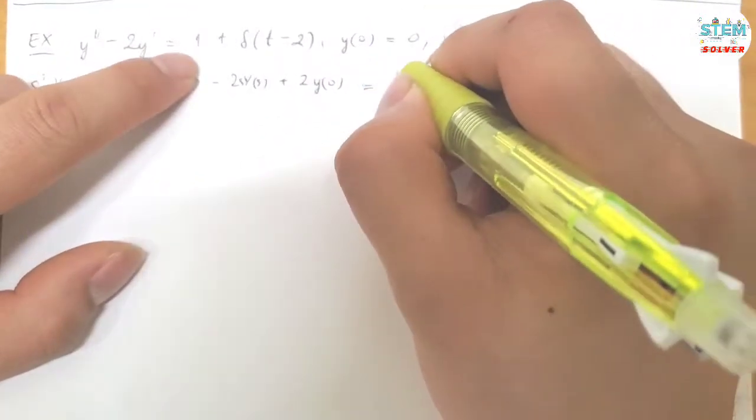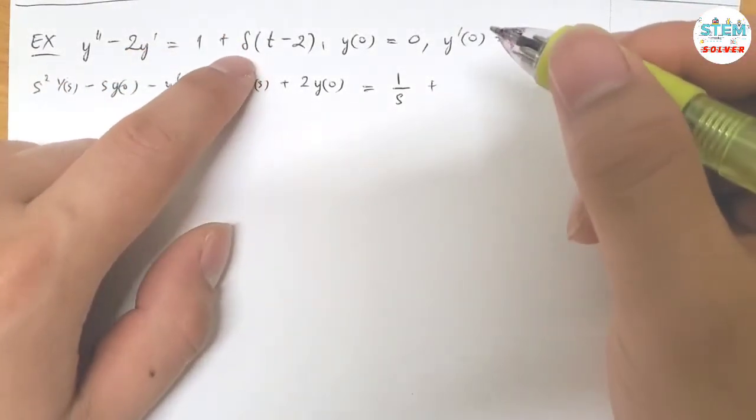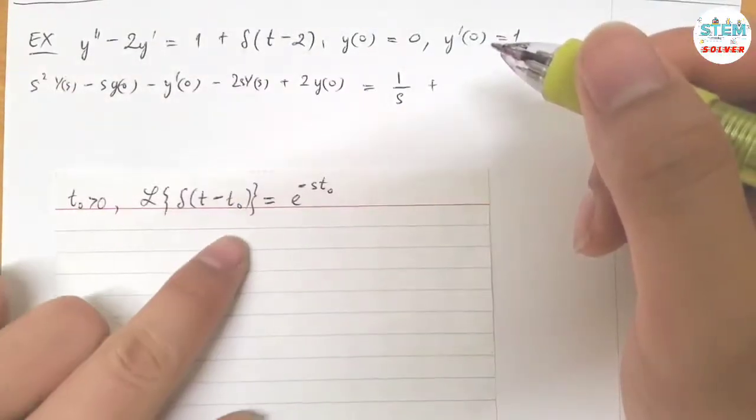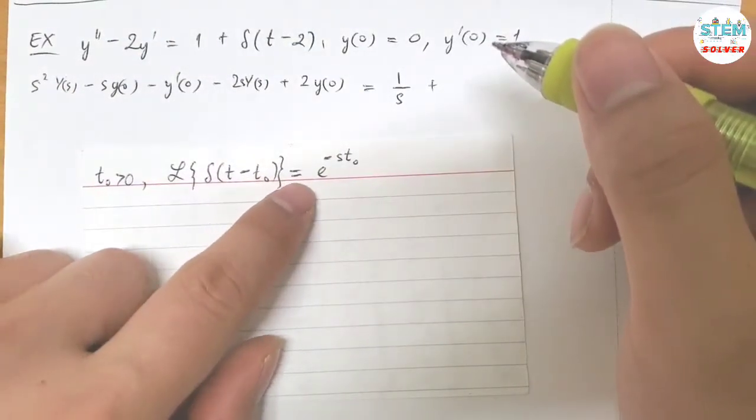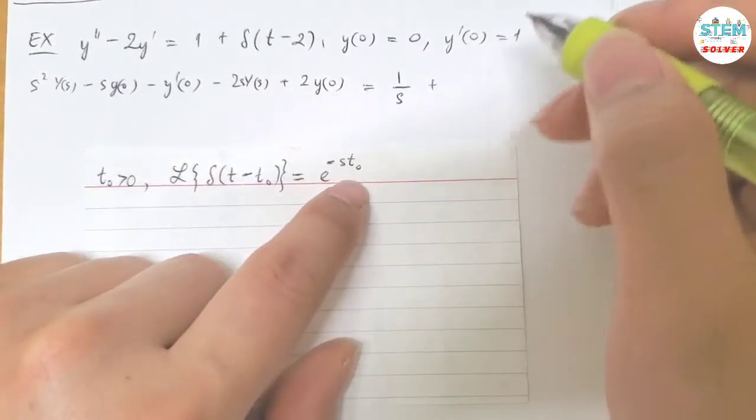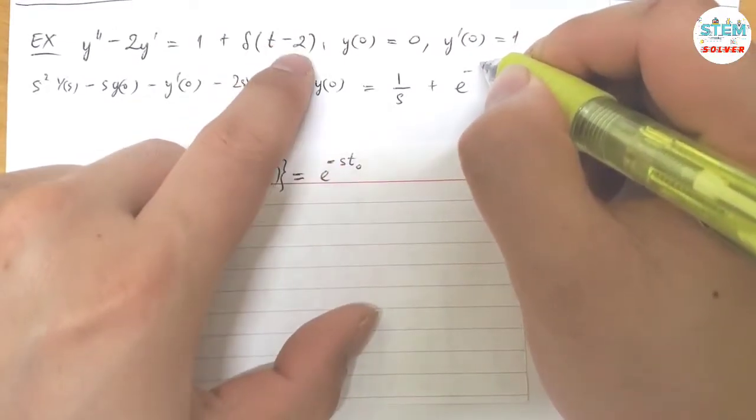So this is called the Dirac delta function, and if you don't remember, the Laplace transform of Dirac delta function is equal to E to the negative ST0. So what about the notice? You just plug it in. So that means I have E to the negative 2S.